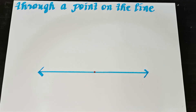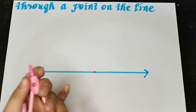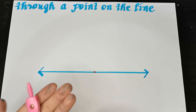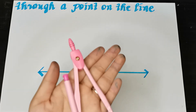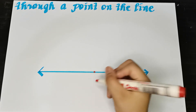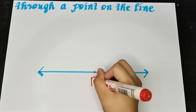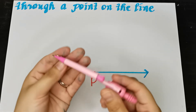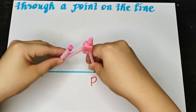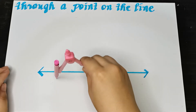So to do that, first step is, of course, get your compass. So place the compass at point P. Let me name this point as my point P. And then place the compass point here on point P, somewhere here, and draw an arc.